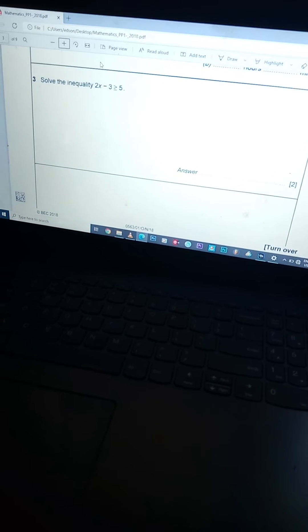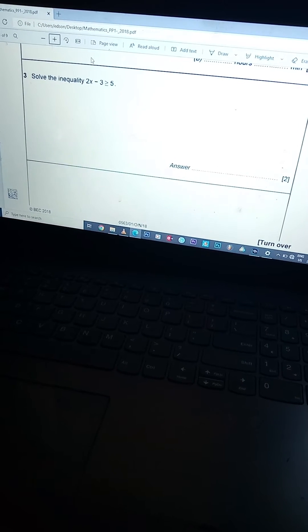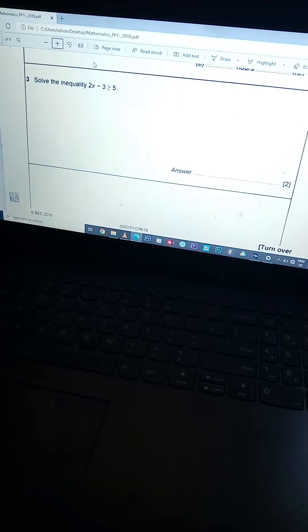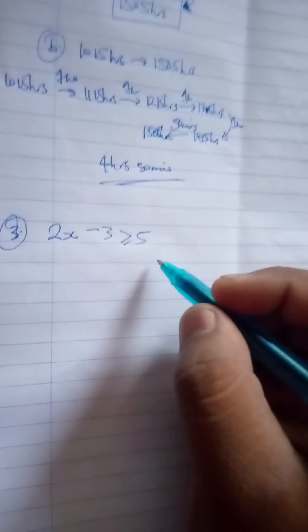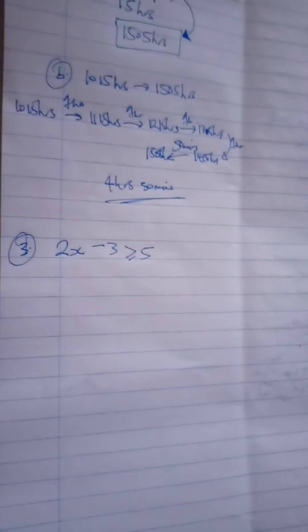The third one says solve the inequality 2x minus 3 is greater or equal to 5. So let's write it down: 2x minus 3 is greater or equal to 5.